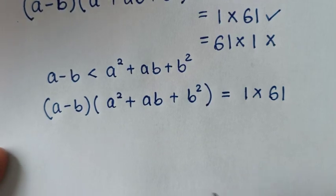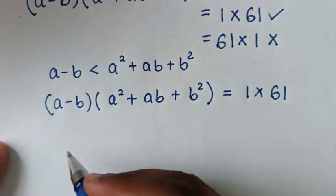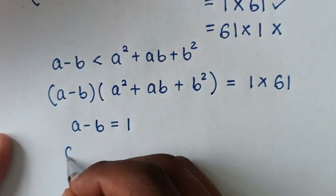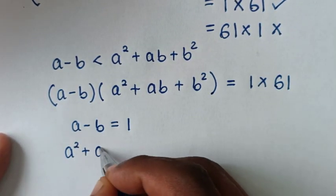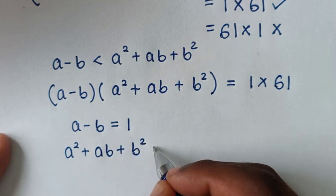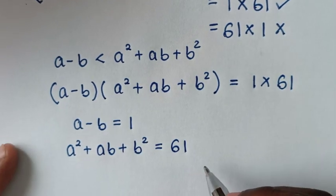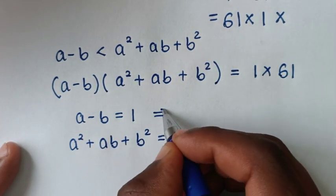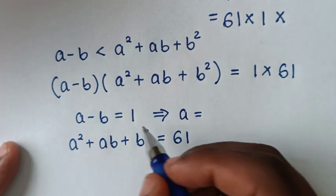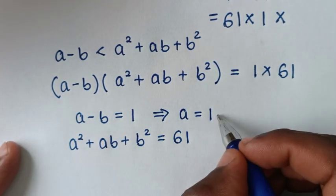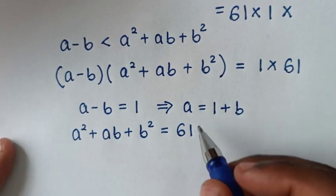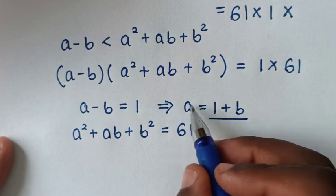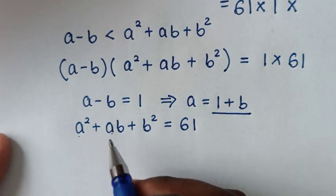Then, from here, we have two equations: a minus b is equal to 1, and a² + ab + b² is equal to 61. From the first equation, we take negative b to the other side, so a is equal to 1 plus b. We will substitute this expression for a into the second equation.